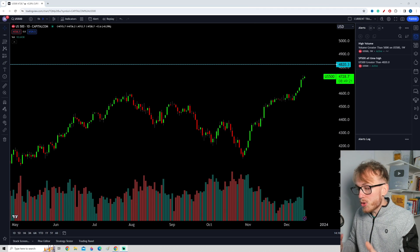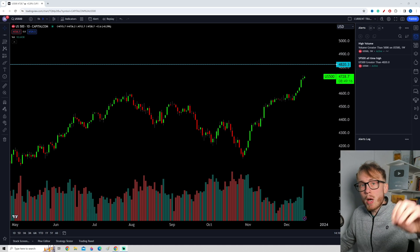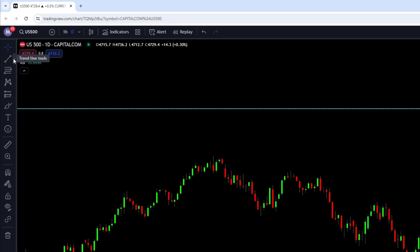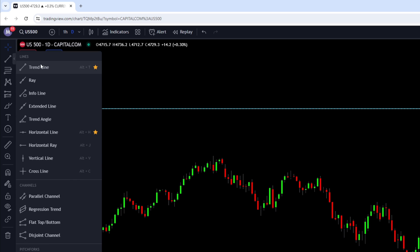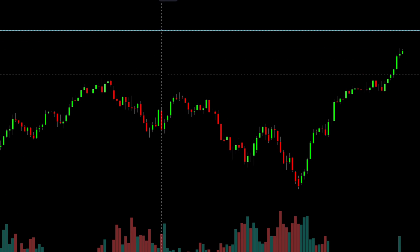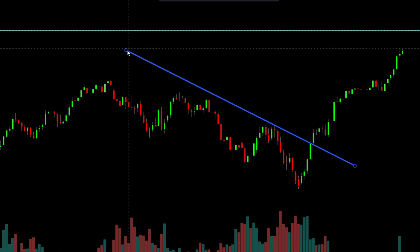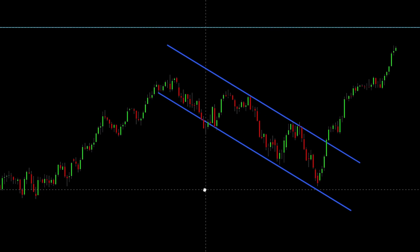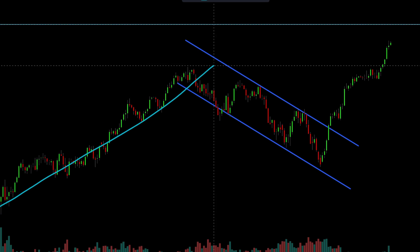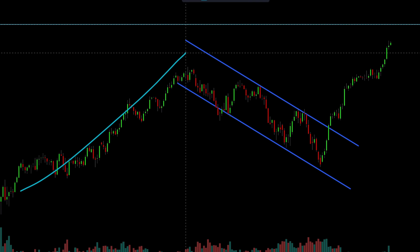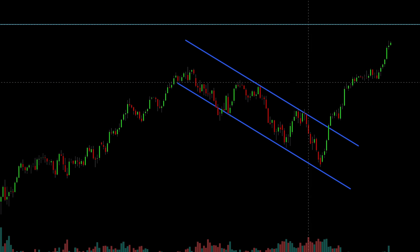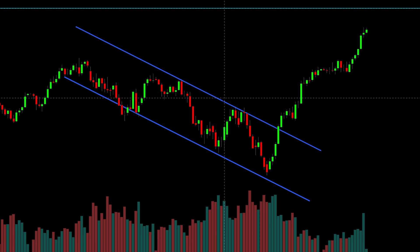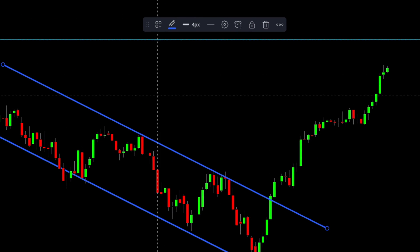Now let's look at another super useful way to use alerts — getting alerts when we break a certain chart pattern or trend channel. You can actually create alerts for all trendline tools and patterns. Let's demonstrate by drawing a trendline. Looking at the S&P 500 on the daily timeframe, it created a sort of beautiful deep pullback — you can look at this as a bullish flag: an impulse move followed by a pullback, then the next impulse move.